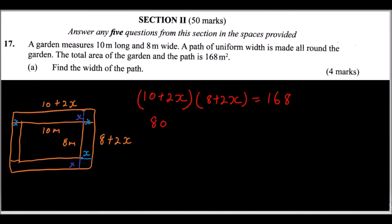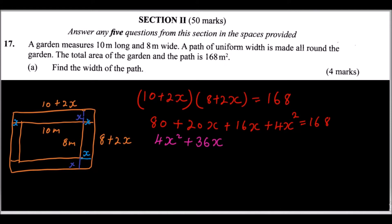Opening the brackets: 10 times 8 gives 80, 10 times 2x gives 20x, 2x times 8 gives 16x, and 2x times 2x gives 4x squared. So we have 4x squared plus 20x plus 16x plus 80 equals 168. Collecting terms: 4x squared plus 36x plus 80 minus 168 equals 0, which simplifies to 4x squared plus 36x minus 88 equals 0. This is a quadratic equation.